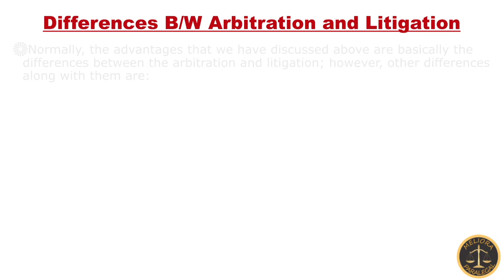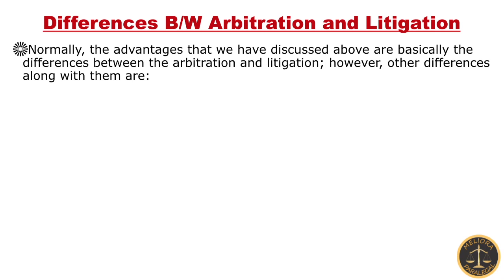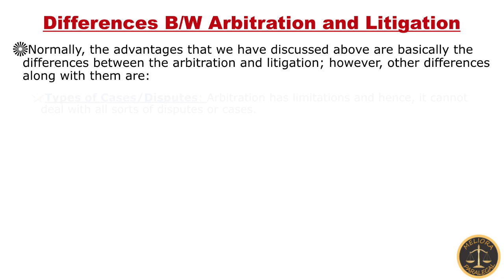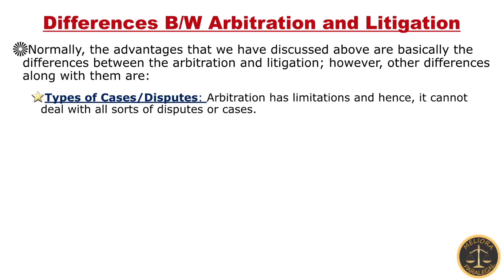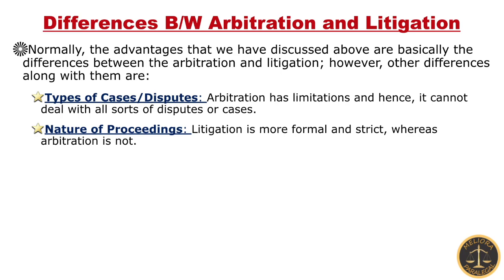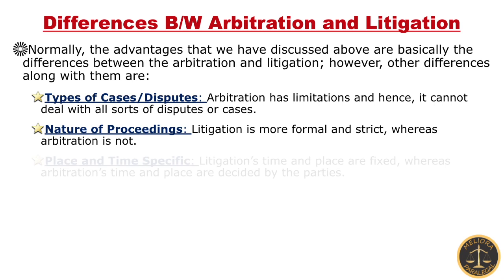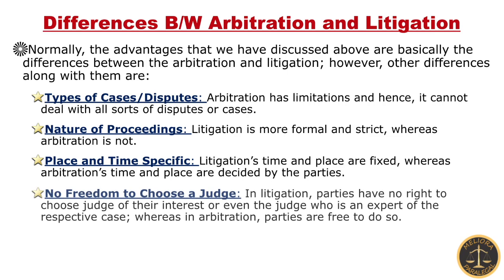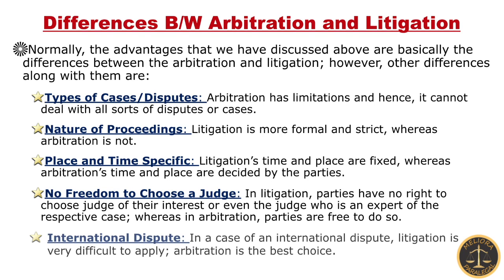Now, come to the differences between arbitration and litigation. The advantages discussed above represent many of these differences. However, some additional differences are: all cases are not eligible for arbitration, whereas in litigation you can file any case or dispute. Litigation is formal and strict, whereas arbitration is less formal and flexible. Litigation is time and place specific, whereas arbitration is not. In litigation there is no freedom to choose the judge, but in arbitration you can choose an arbitrator of your choice. In case of an international dispute, arbitration is the only choice.